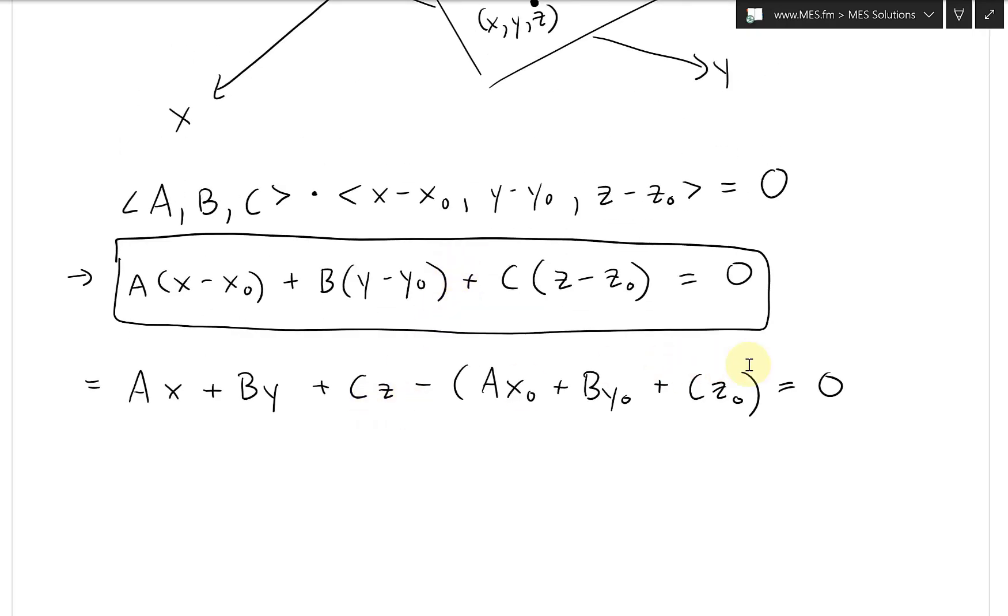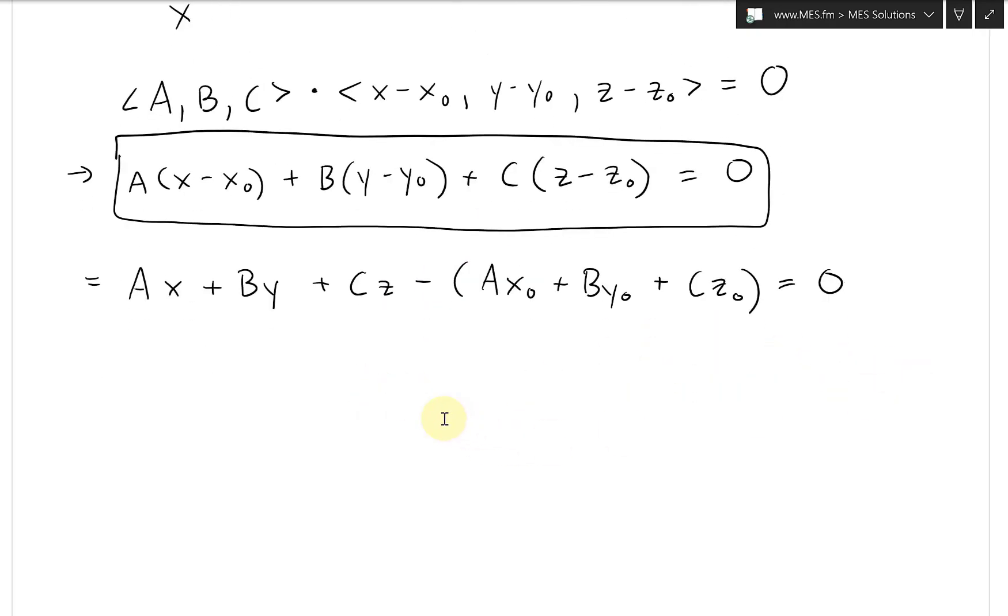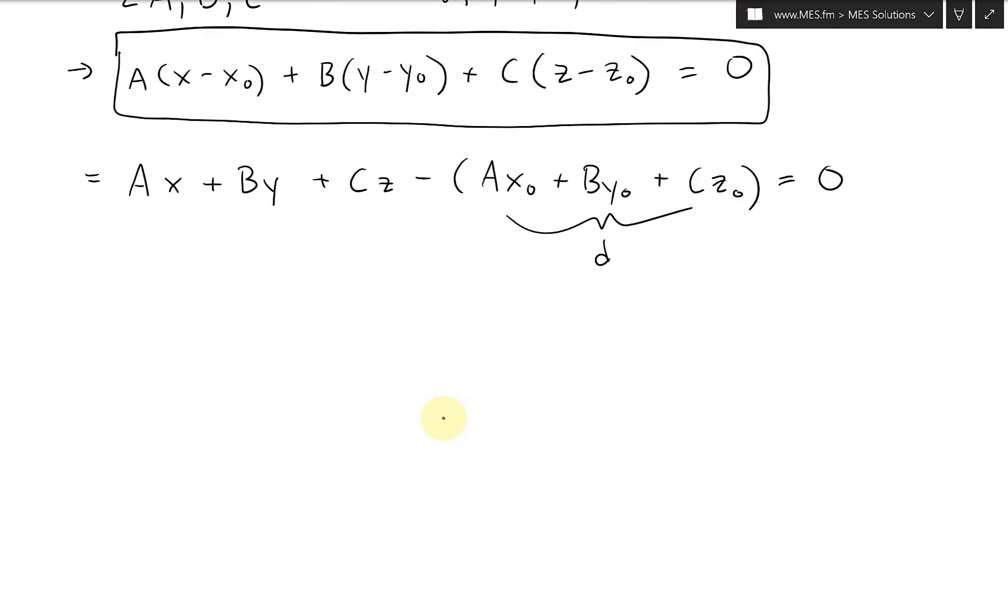All right, so now that we have this set up, what I'm going to do is, I'm going to call this lowercase d, and then just write this out as AX + BY + CZ - d = 0. So this is the equation of a plane that's usually given.